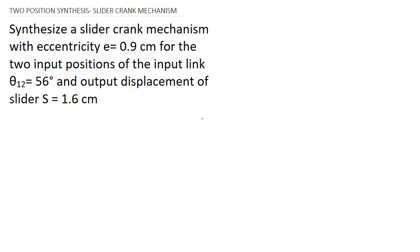Today we are going to synthesize a slider crank mechanism for the given two positions. Synthesize a slider crank mechanism with eccentricity equal to 0.9 centimeter for the two input positions of the input link: theta 1-2 equal to 56 degrees, and output displacement of the slider S12 equal to 1.6 centimeter.